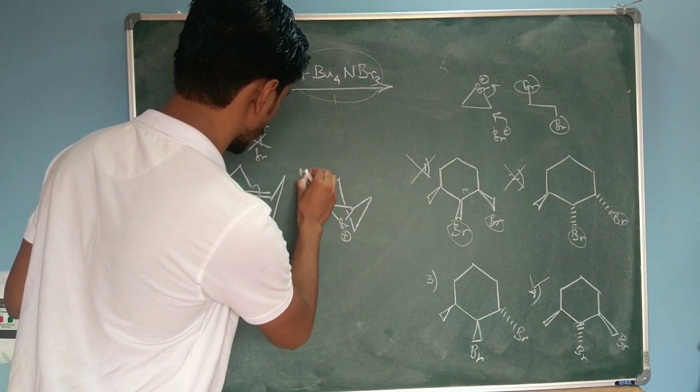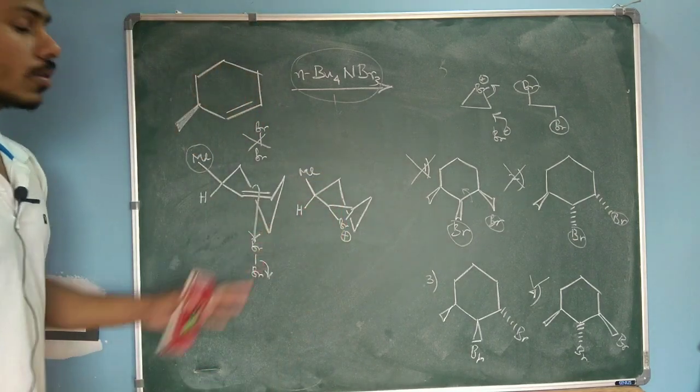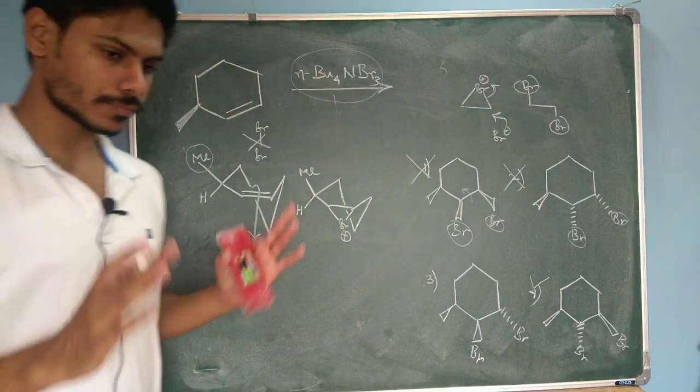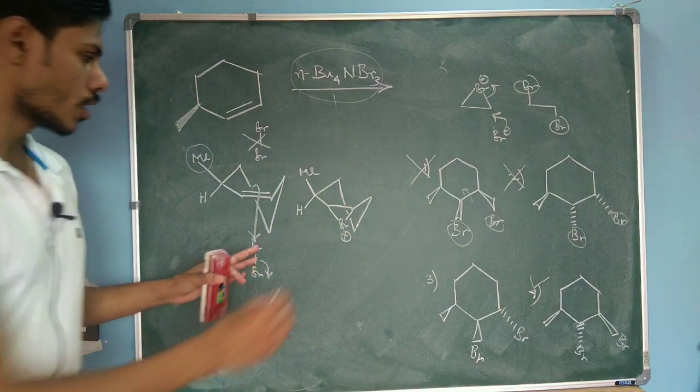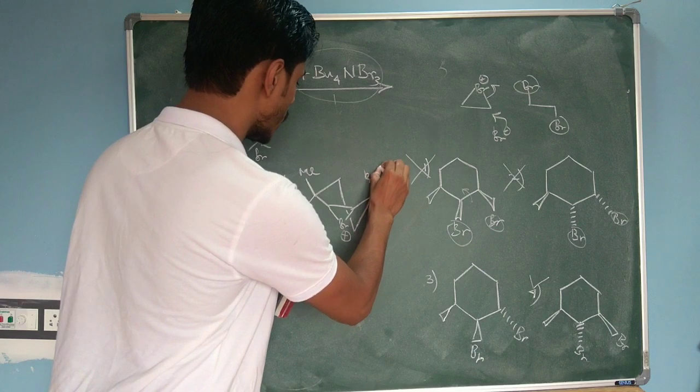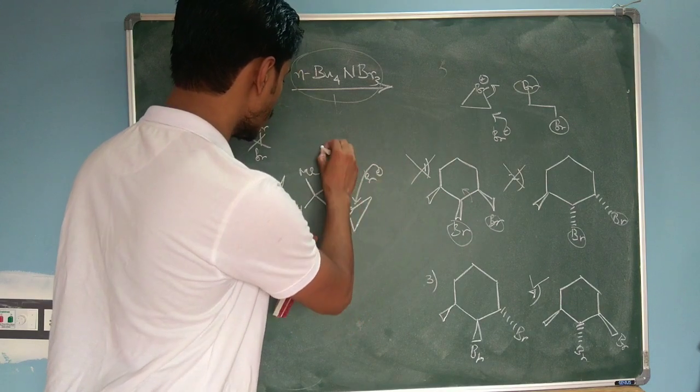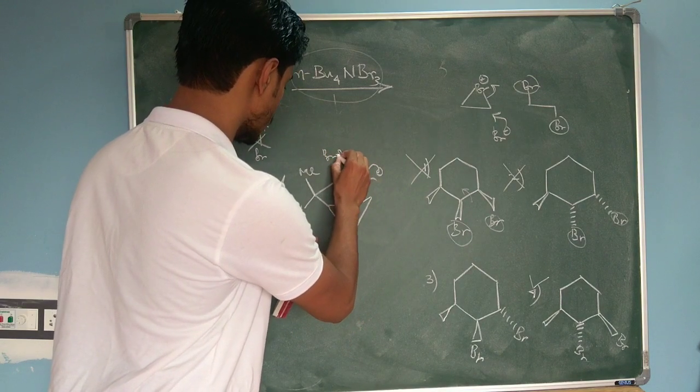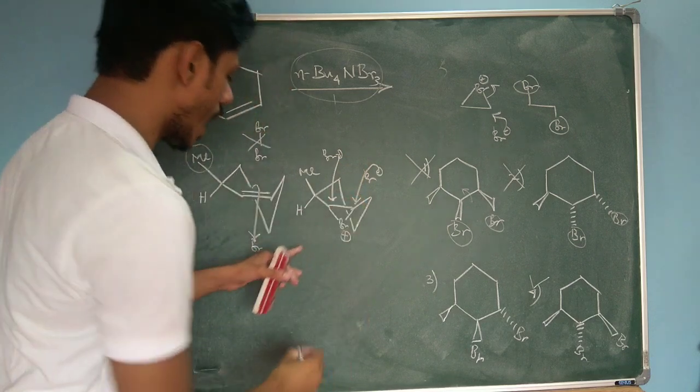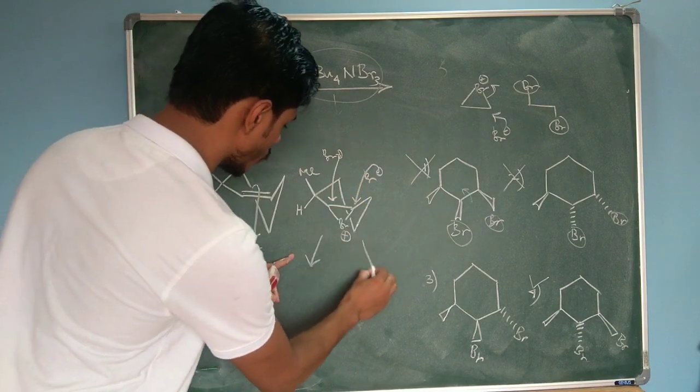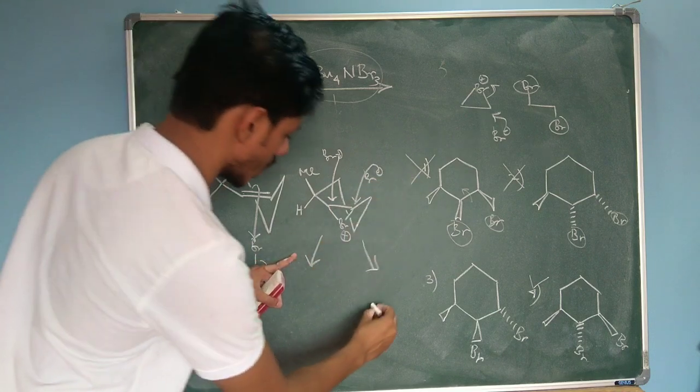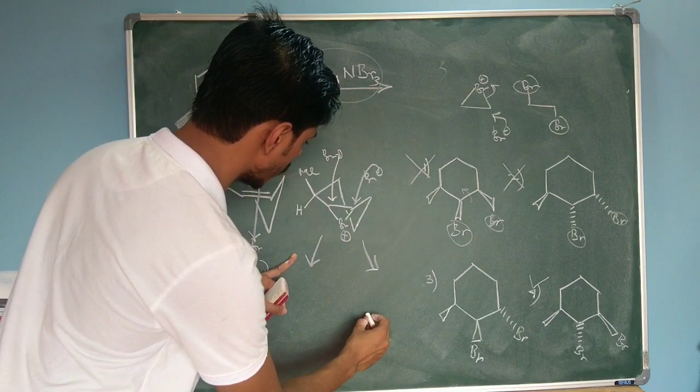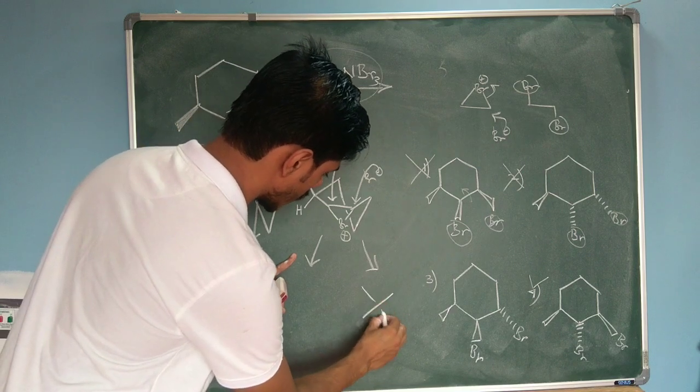Now the opening of this bromonium ion is very important. Either your BR- it can attack from this side or the BR- it can attack from this side and according to that you can get two products.